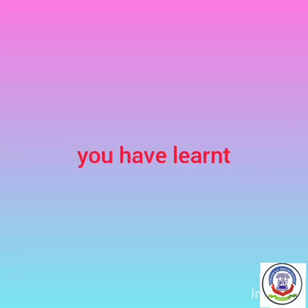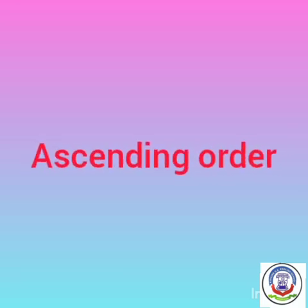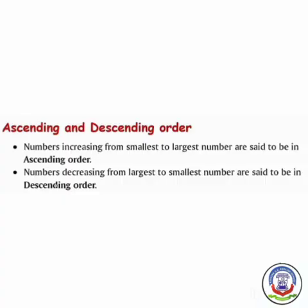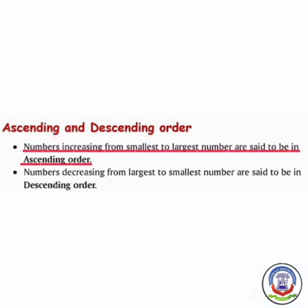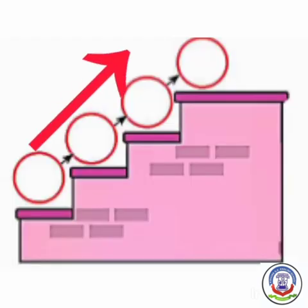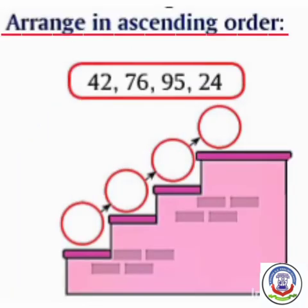In the previous video, you have learnt Ascending Order and Descending Order. Now we will start from the book. Numbers increasing from smallest to largest number are said to be in Ascending Order. When we arrange numbers from small to large, we call it Ascending Order — just like climbing stairs from bottom to top.